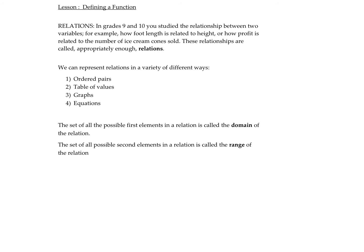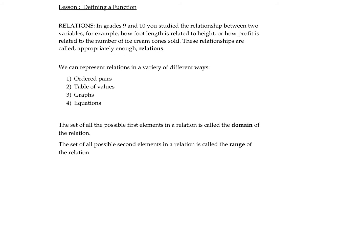We can represent relations in a variety of ways. Generally, the ways we express them is ordered pairs, table of values, which really is just ordered pairs but organized into a table. We might plot those ordered pairs and make a graph, and then we might look at the pattern and create an equation. So these are all different ways of representing relations.